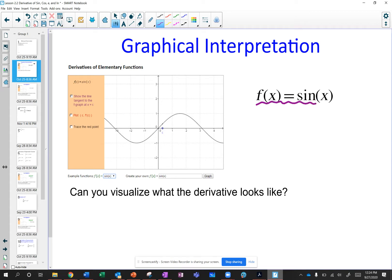This is the graph of the sine function, and we want to find its slope. If I'm coming from negative values, negative 3 to negative 2, we notice that the slope is negative.